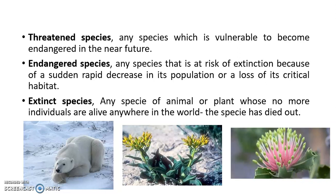What is the difference between these three statuses that are granted to species? These statuses are given on the basis of their loss — what is the status of the species, is the species population enough, is their habitat intact and they are surviving well, or if they are endangered. We will first see the difference between threatened, endangered, and extinct species.